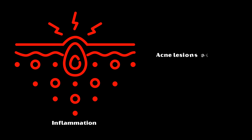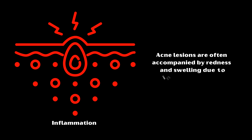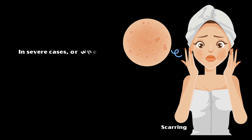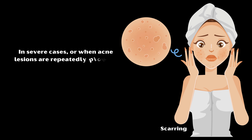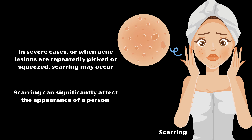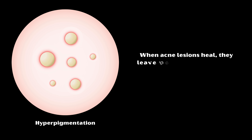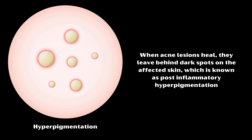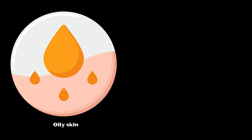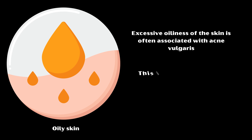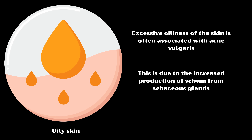Acne lesions are often accompanied by redness and swelling due to inflammation in the affected area. In severe cases, or when acne lesions are repeatedly picked or squeezed, scarring may occur, which can significantly affect the appearance of a person. When acne lesions heal, they leave behind dark spots known as post-inflammatory hyperpigmentation. Excessive oiliness of the skin is also often associated with acne vulgaris, due to increased sebum production from the sebaceous glands.